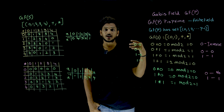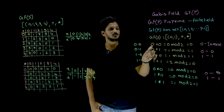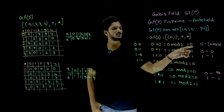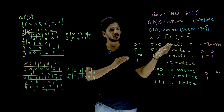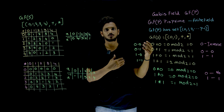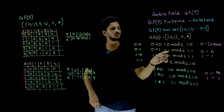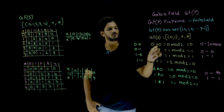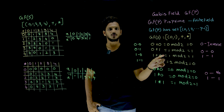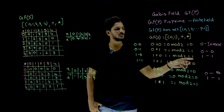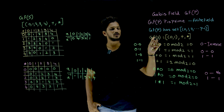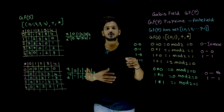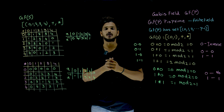Let us check whether GF(2) satisfies the closure property. 0 plus 0 is 0, modulus 2 is 0 — you get an element present in the set. That is what closure property means. 0 plus 1 is 1, 1 modulus 2 is 1. 1 plus 0 is 1, 1 modulus 2 is 1. 1 plus 1 is 2, 2 modulus 2 is 0. So it is satisfying the closure property.